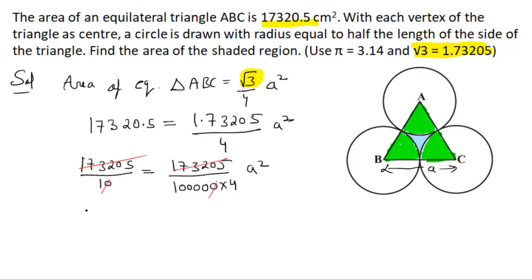Cross-multiplying gives us 40,000. Taking the square root, and since length is positive, a equals 200. So the side length is 200 centimeters.